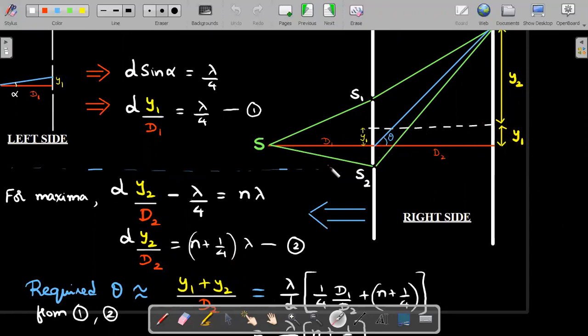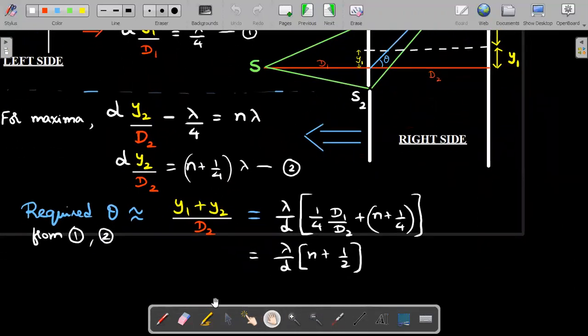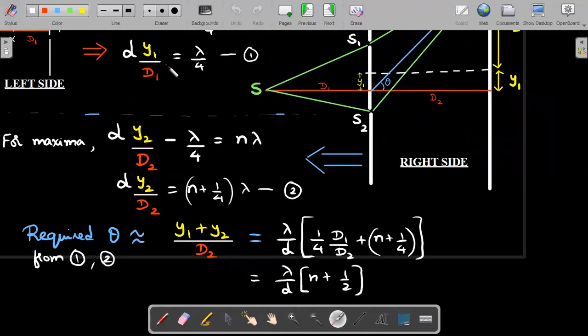Remember that theta was measured with some offline, not the symmetry line. So that's the care that you have to take. That's the trap in the question. So that Y1 plus Y2 divided by D2. I already got Y1 from the first equation, can you see that here? And Y2 from the second equation, I'll just nicely substitute them into this value.